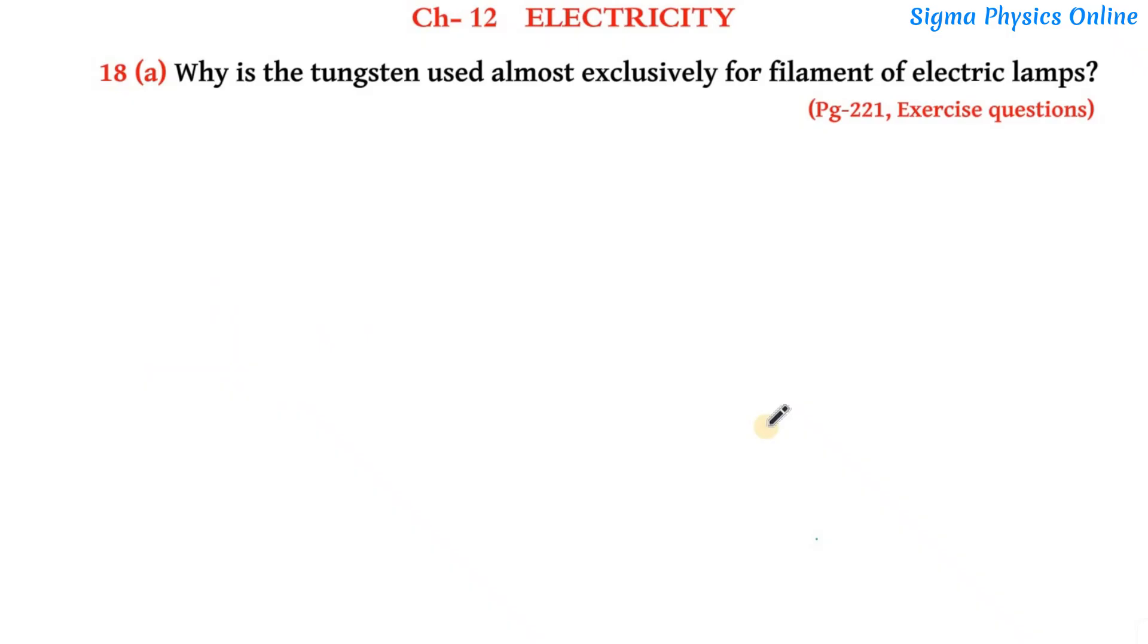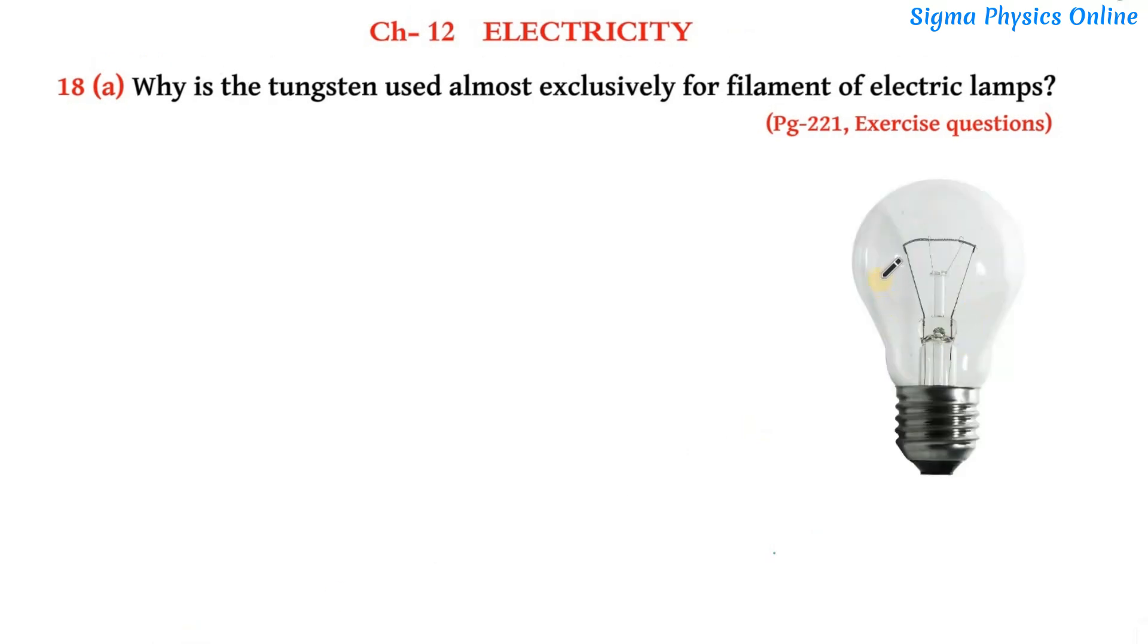Hello students, welcome back. Let's solve exercise question number 18a of chapter 12 Electricity from class 10 NCERT science textbook. The question is: Why is tungsten used almost exclusively for filament of electric lamps?